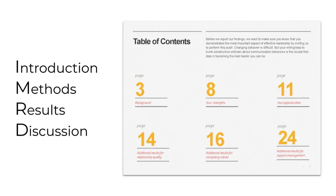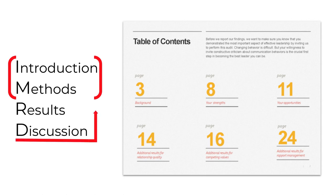To summarize the guidelines for presenting research in industry, do three things. One: condense the introduction and methods, and possibly combine them into a single background section. Two: present conclusions and recommendations next, starting with any positives and including enough supporting data and interpretation to persuade the audience. And three: display your results and other details last, in tables, charts, and other graphics, and remember to include succinct interpretations or conclusions. I can't wait to see what you create. Good luck!